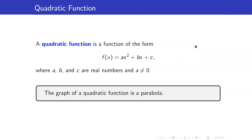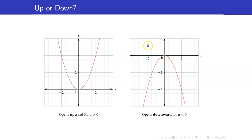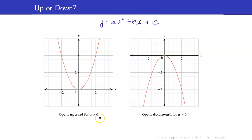Note that the graph of a quadratic function is a parabola. Here are the characteristics of a parabola. The opening of the parabola will depend on the sign of a. If a is positive, then your parabola will open upwards, whereas if a is negative, then your parabola will open downwards.